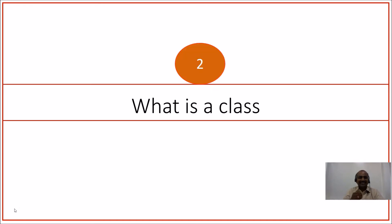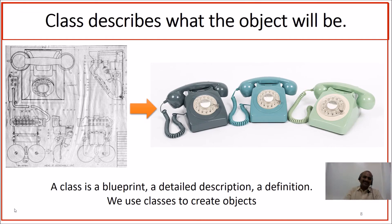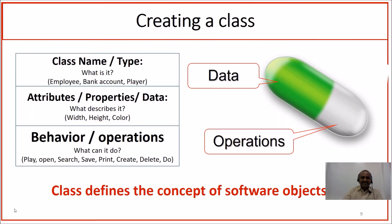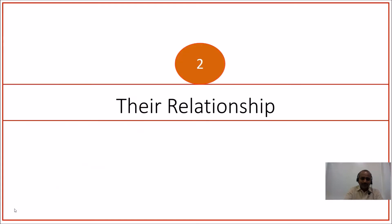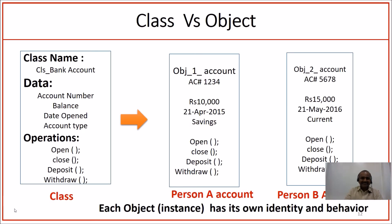Let us now understand what is a class. A class is a blueprint that defines and describes the objects that get born out of the class. Just like what we have seen in the case of objects, we also see the same three compartments — the name, the attributes, properties, data or behavior, and operations — in the case of a class also. It is just that it is a logical concept. If you take the case of the bank account class, all the objects that are generated out of this class have the same data points and operations.